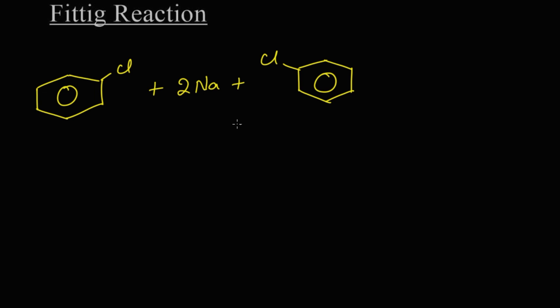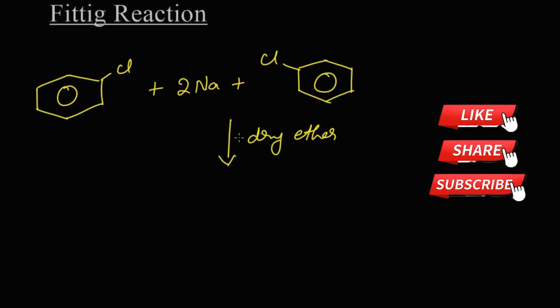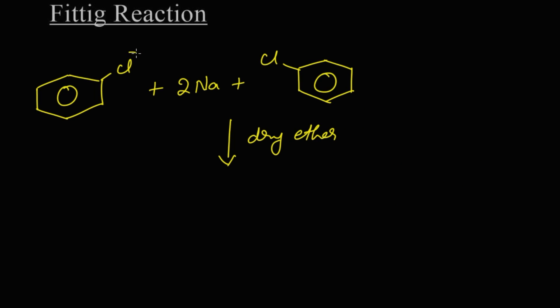The reaction takes place in the presence of dry ether. What happens during the reaction? The two chlorine from the chlorobenzene and two sodium will leave as 2 NaCl, that is sodium chloride. The remaining two phenyl groups will get attached and we get a product like this which is known as diphenyl.